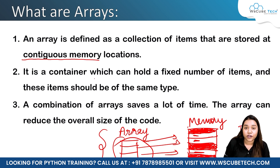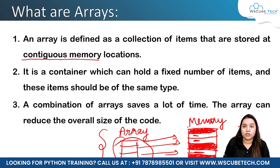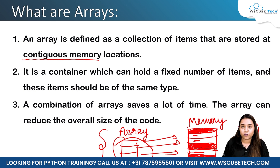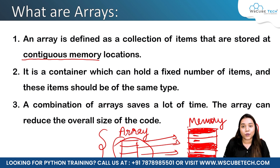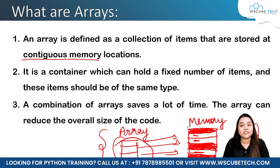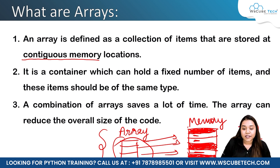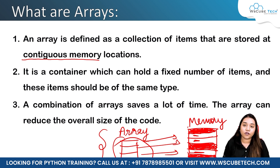The number of consecutive spaces needed depends completely on how many elements are in your array. Another key point: an array is a container that holds a fixed number of items, and all items must be of the same data type. Unlike a list — which can hold strings, floats, and integers together — an array must hold only one data type.